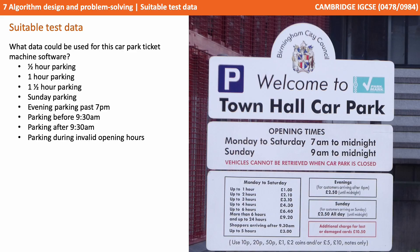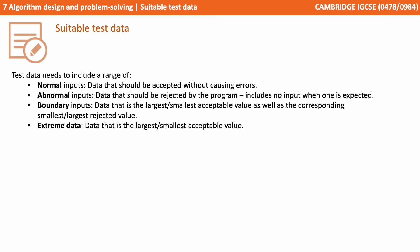Out of all this information, we can see a number of scenarios we may want to construct tests for, supplying normal, abnormal, boundary, and extreme data. We might want to test half hours and full hours of parking, one and a half hours parking on a Sunday in the evening, and what happens if you attempt to park before or after closing times. That's everything you need to know for the exam — pause the video now and take some notes.